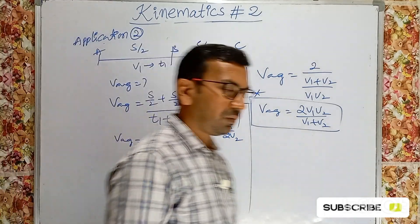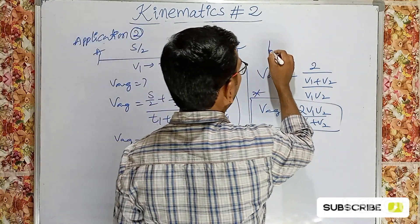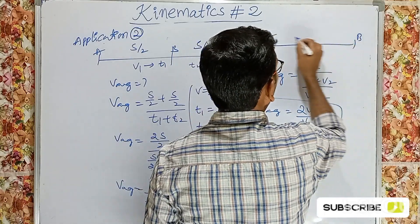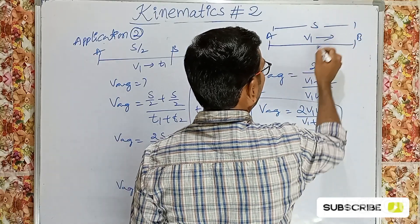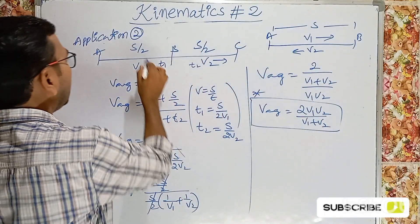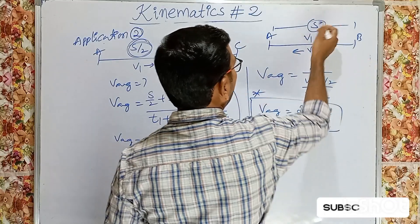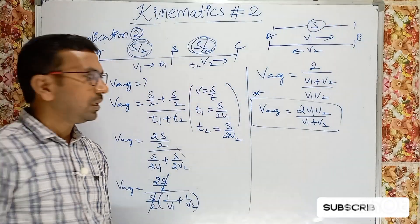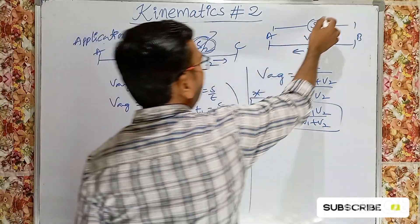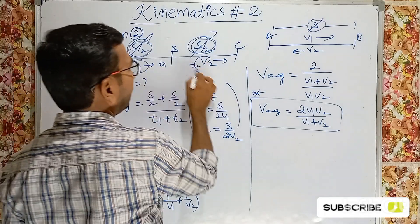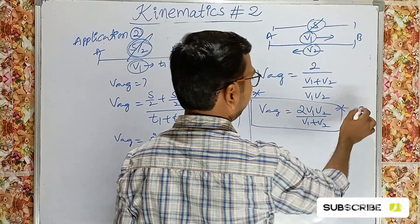Observe: in both applications 1 and 2, when the distances are the same (S and S, or S/2 and S/2) and speeds are different, the average speed formula is 2V1V2/(V1+V2). Remember: when distance is same and speeds are different, V_average = 2V1V2/(V1+V2).